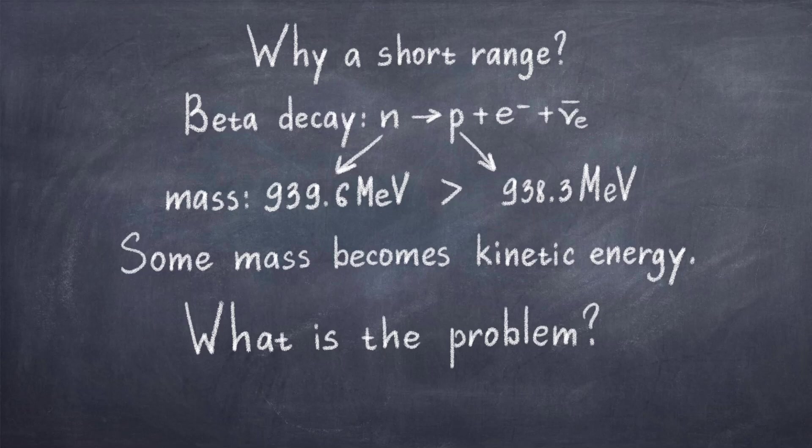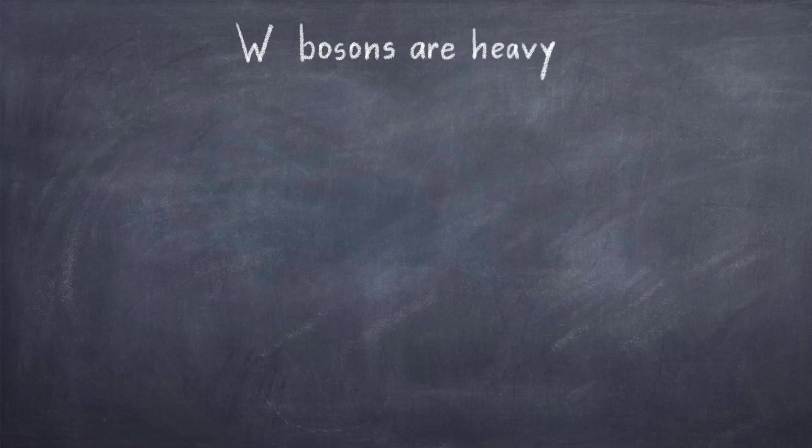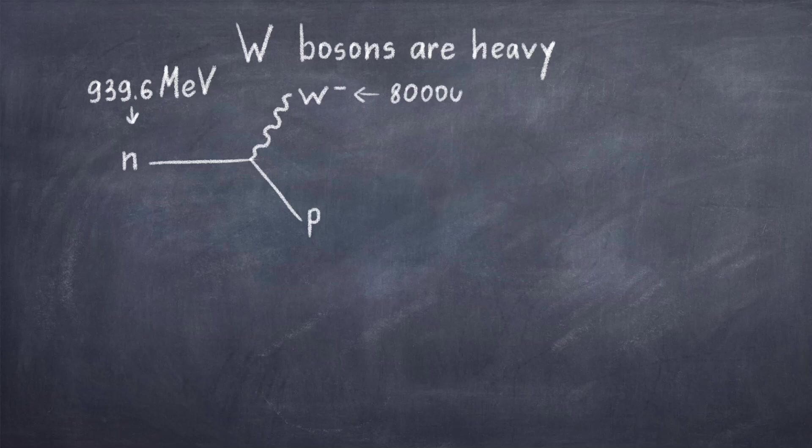So, where is the problem, and what does this process have to do with the range of the weak force? If we look at the process in more detail, we see that the neutron decays into a proton and a W boson, and this W boson then decays into an electron and an electron anti-neutrino. The problem is that the W boson has a mass of around 80,000 MeV, thus a bit more than 80 times the mass of a neutron. It would seem like we are creating mass out of nothing.